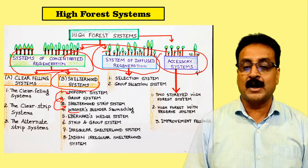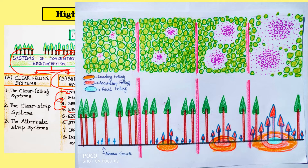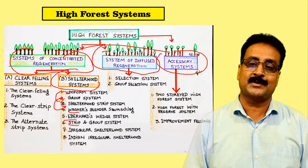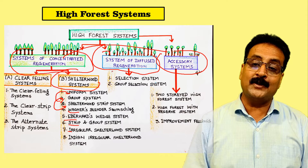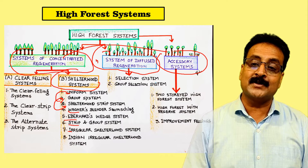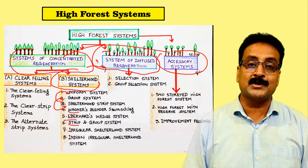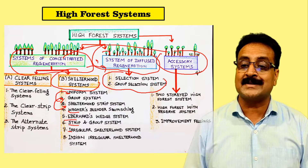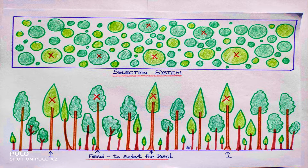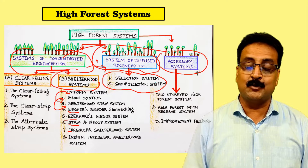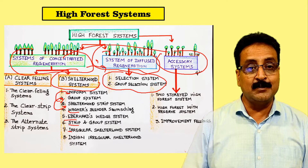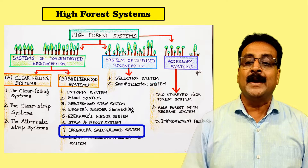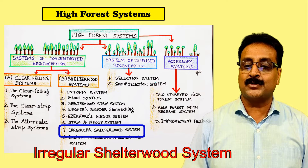Further systems include Wagner's blender, Sam's log, Ever-heard wedge system, strip and group system, irregular shelter wood system, and Indian irregular shelter wood system. After the system of concentrated regeneration we move to the system of diffuse regeneration — the selection system — which is more complex, involving all-age forest, requiring more skill.